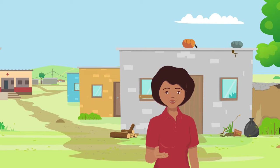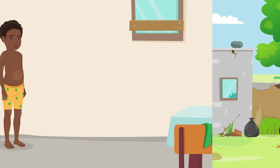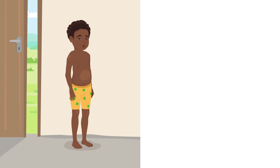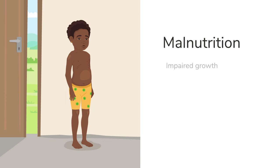As you care for the children in your community, you may see that some are not getting enough nutritious food for their bodies to grow properly. This threat is called malnutrition, and if it continues for a long time, it can cause lifelong damage such as impaired growth and developmental delays.